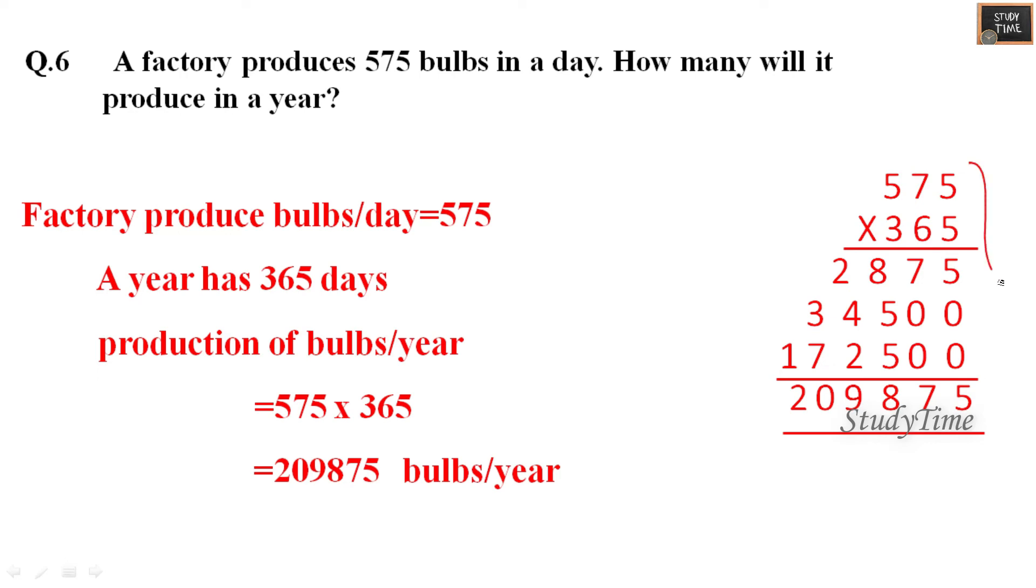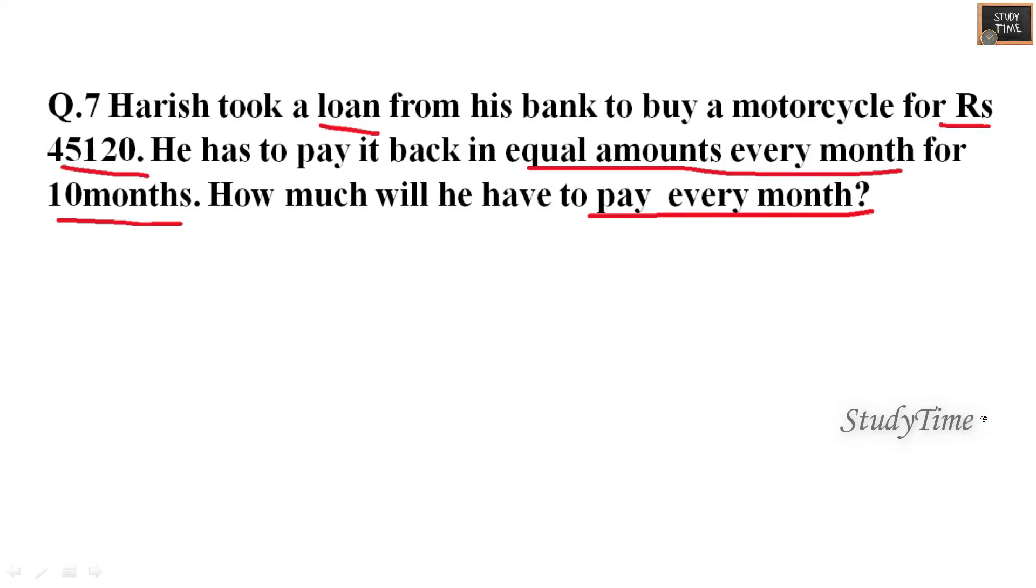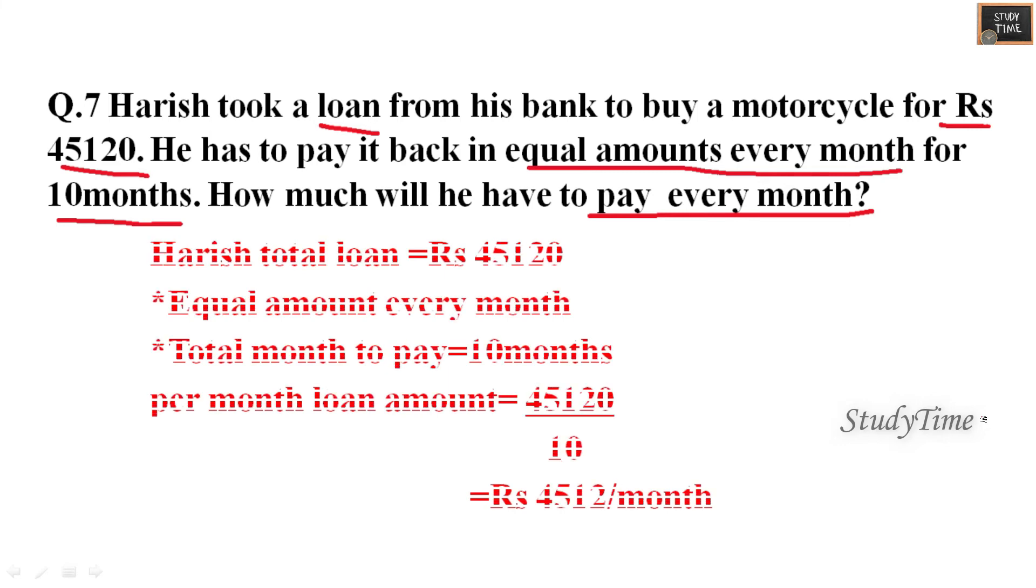Harish took a loan from his bank to buy a motorcycle for rupees 45,120. He has to pay back equal amounts every month for 10 months, so you have to divide it by 10. The answer is rupees 4,512 per month.